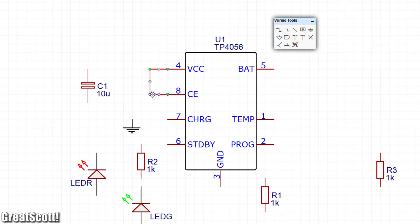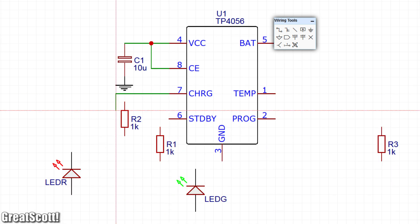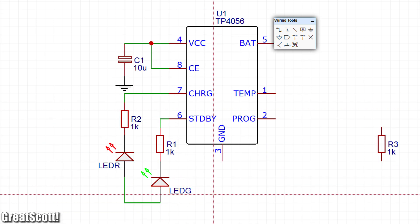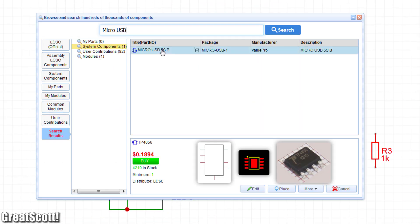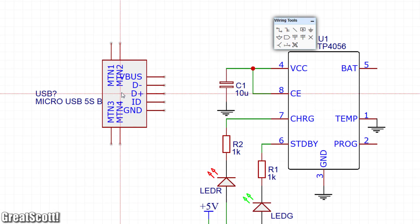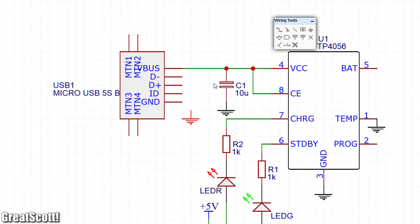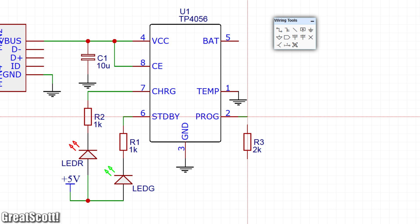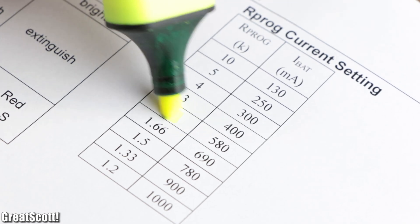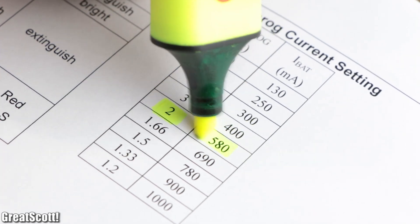And at the end of the datasheet we can see a typical application schematic which we pretty much only have to rebuild within the EasyEDA software by utilizing the passive components of the database. The only thing we have to add by ourselves so far is a micro USB port for the power input, and a 2 kilohm resistor to set the charge current to 580 milliamps.